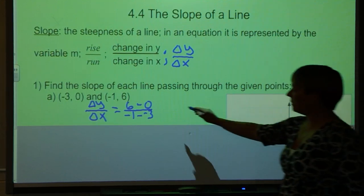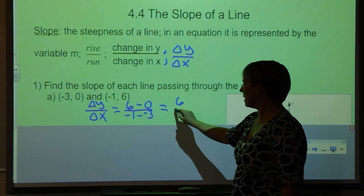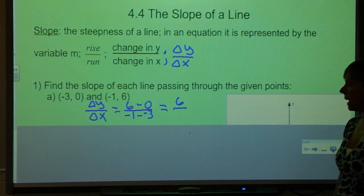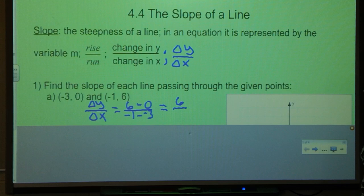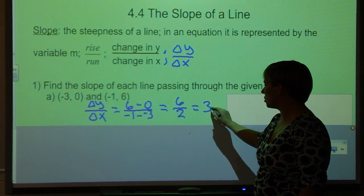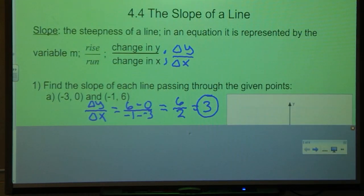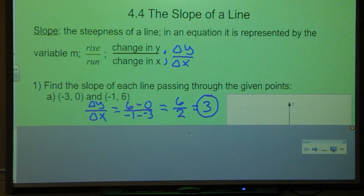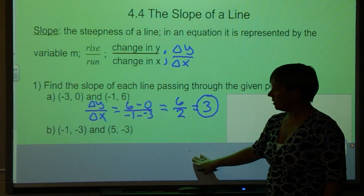So when we do this subtraction we have 6 minus 0 gives me 6. Negative 1 minus -3 is really -1 plus 3, so we get 2. 6 divided by 2 gives me a slope of 3.